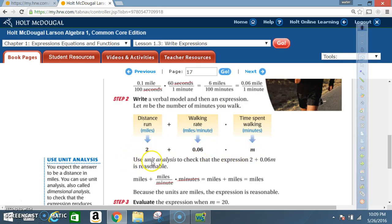Now, use unit analysis to check that the expression 2 plus 0.06 times M is reasonable. Okay, now using unit analysis, we got our miles plus miles per minute, that's the walking rate, miles per minute, and the time is in minutes. So, we got miles plus miles over minutes times minutes. So the minutes will do what? The minutes will cancel out. So we're left with miles plus miles. That's how we got miles plus miles right there. So a mile plus miles is equal to miles.